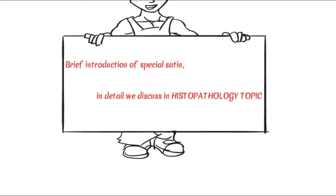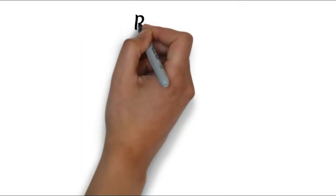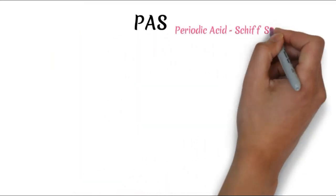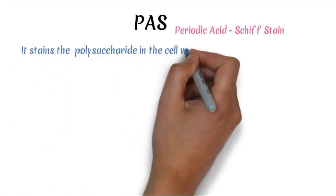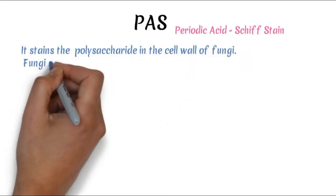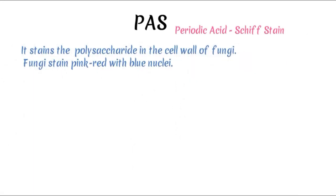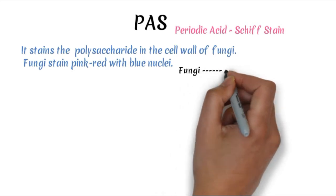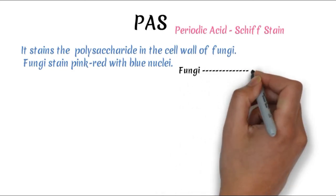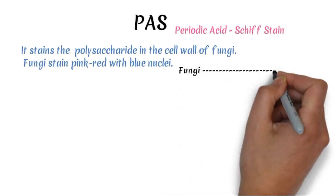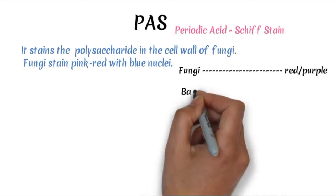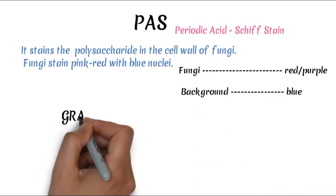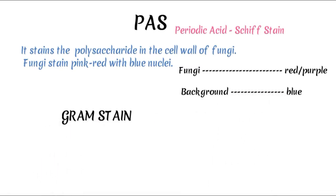First is PAS — that is Periodic Acid-Schiff stain. It is a stain which stains polysaccharides in the cell wall of fungi. Fungi stain pink-red with blue nuclei. The background is usually purple or blue in color.